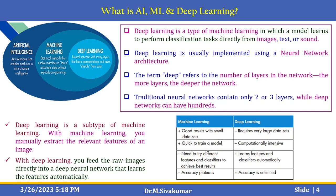Artificial intelligence is a technique that enables machines to mimic human intelligence. Machine learning is a statistical method that enables machines to learn tasks from data without explicit programming. Deep learning, currently the most trending, is a type of machine learning in which a model learns to perform classification tasks directly from images, text, or sound — corresponding to image processing, natural language processing, and signal processing respectively.